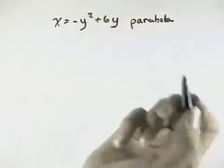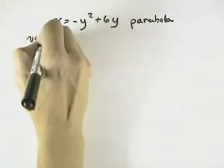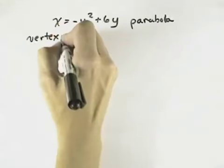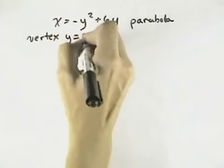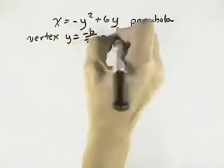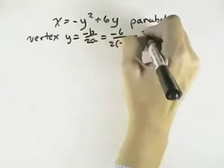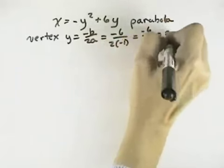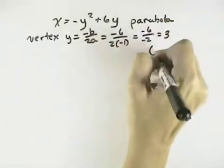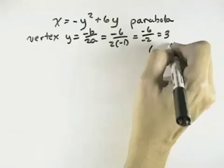In order to graph our parabola, what we're going to need to do is find the vertex. And since it's not in standard form, we can find the vertex by saying y will equal negative b over 2a, where negative b is negative 6 and a is negative 1, so we have negative 6 over negative 2, or 3. So the y value of our vertex is going to be 3.